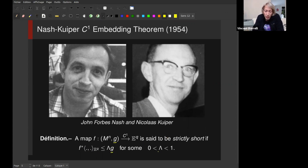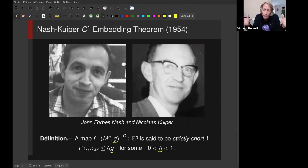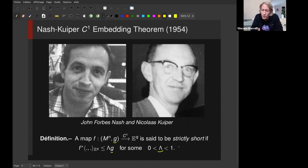If your manifold is compact, each time you have an immersion of this manifold into E^q, up to rescaling you obviously have a strictly short map. So strictly short maps are as abundant as immersions if you are compact. If you are non-compact this is no longer true — you can have an immersion and no strictly short immersion.